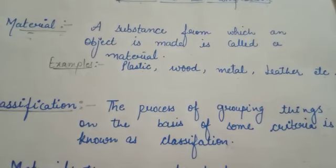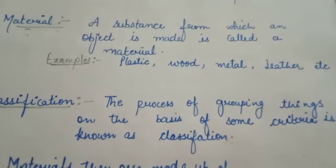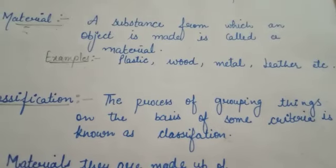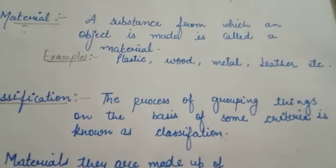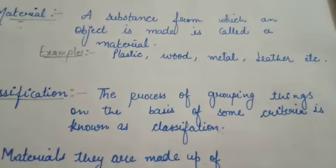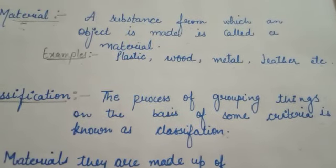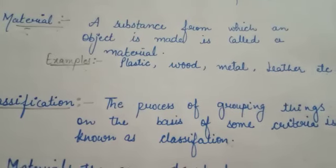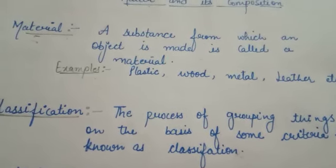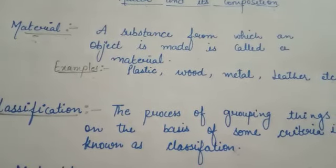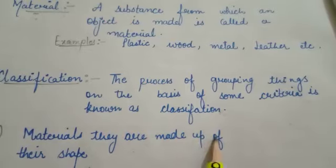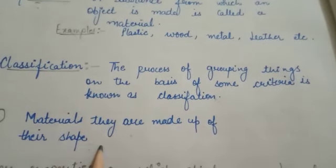Like objects such as pen, bathing tub, and toys — they are made up of plastic. Similarly, bed, geometry box, notebook, and table — they are rectangular in shape. So, joh humaare paas jih objects thi, unko humne classify kar diya according to the material they are made up of and according to the shape.